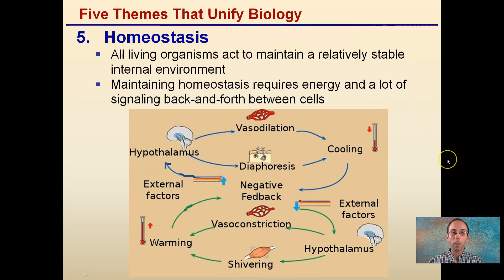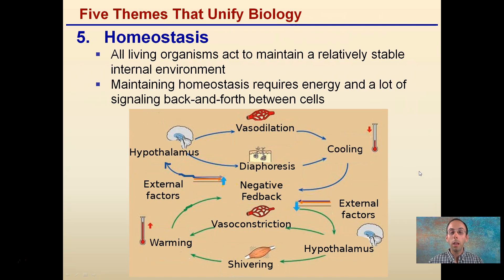Lastly, the fifth theme that unifies biology is homeostasis. All living organisms act to maintain a relatively stable internal environment. Maintaining homeostasis requires energy and a lot of signaling back and forth between cells. You need to have positive feedback and negative feedback systems as a way to lower or raise things to maintain these relatively stable internal conditions.